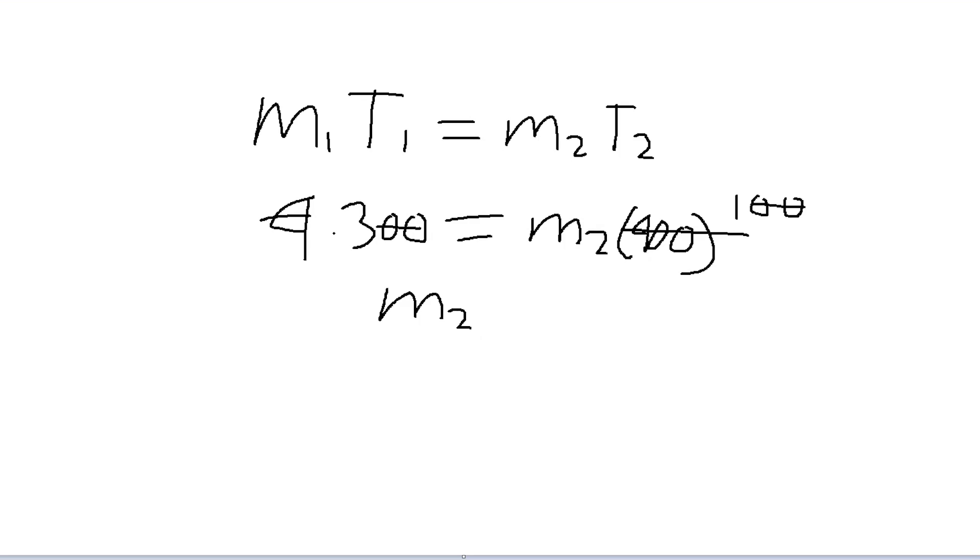We're gonna divide 400 with 4 which is 100 and we can divide 300 with 100 so we got 3. For the next question, if you want to find how many gas that came out from the tube,